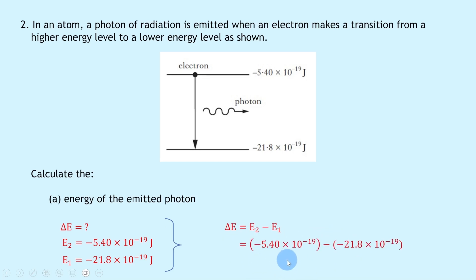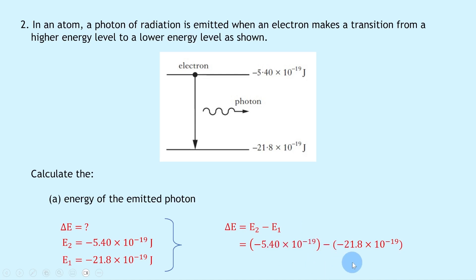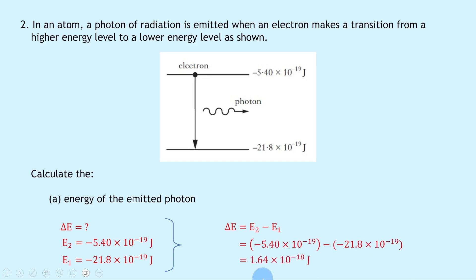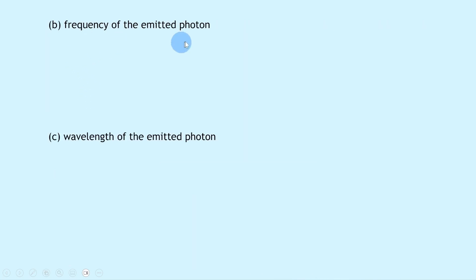Substituting in the numbers gives: ΔE = (−5.40 × 10⁻¹⁹) − (−21.8 × 10⁻¹⁹). Notice the double negative means we add 21.8 × 10⁻¹⁹, giving a positive answer. Putting that into your calculator gives an answer of 1.64 × 10⁻¹⁸ joules.